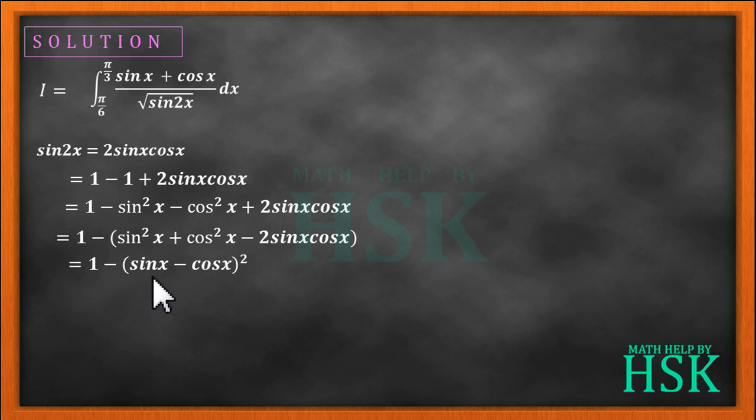Placing the value of sin 2x in the integral we get I equal to sin x plus cos x upon square root of 1 minus sin x minus cos x whole square, dx from the limit pi by 6 to pi by 3.